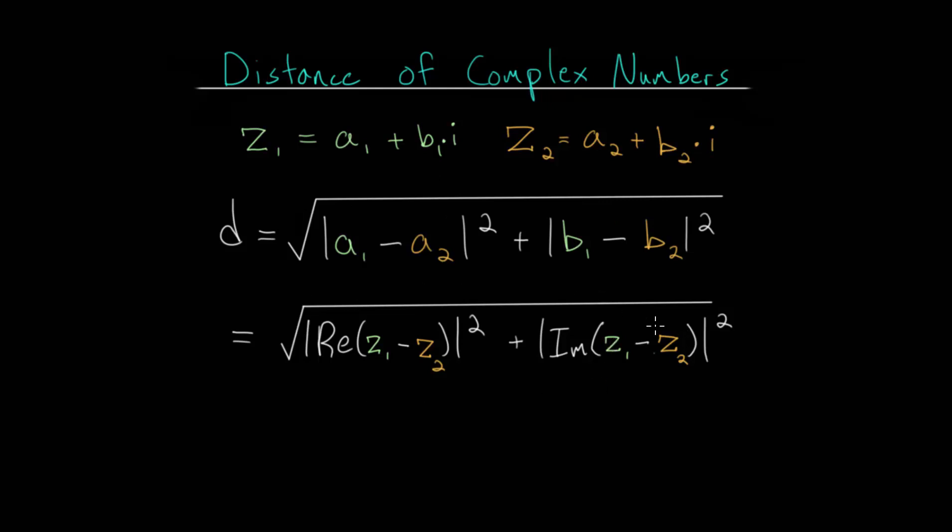And this is the alternate way to write the formula that you're finding the difference between the real parts. Again, you're finding the absolute value of that and squaring it, and you're finding the absolute value of the imaginary parts and squaring that, and adding those together, you will then take a square root of everything.